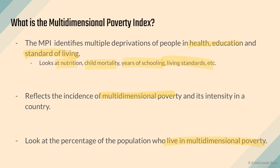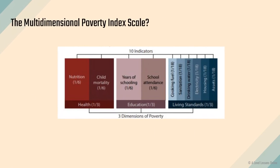This is what your Multi-Dimensional Poverty Index looks like. It combines different factors: health, education, and living standards, each taking up one third. Together they form the dimensions of poverty. Within health itself, it splits into nutrition and child mortality.